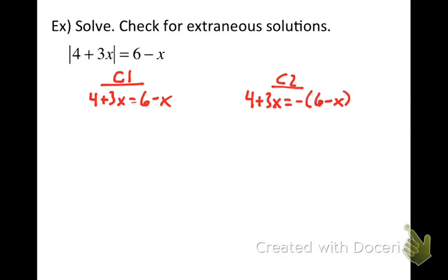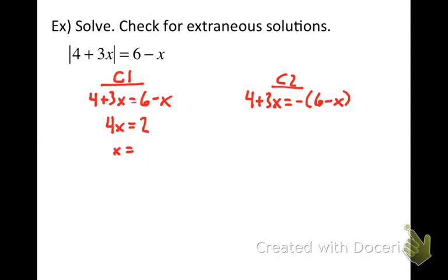Let's solve both equations. For Case 1, get variables on the left: add x to both sides, giving 4x. Subtract 4 from both sides: 6 minus 4 gives 2. So x equals 2 fourths, which in simplest form is 1 half. That's an apparent solution — we'll need to plug it back into the original equation to verify it's actually a solution.